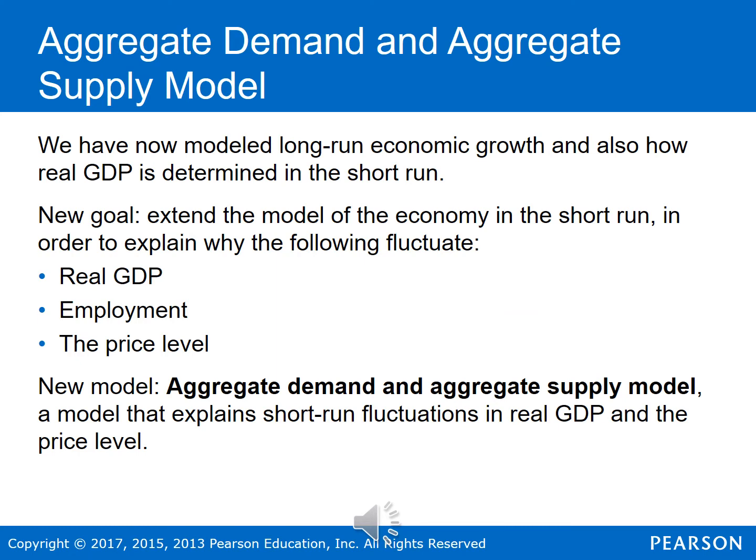Thus far in this class, we've seen how the U.S. economy has experienced a long-run upward trend in real GDP — that over time, real GDP has increased, which has increased the standard of living for members of society. In the short run, however, real GDP fluctuates around this long-term upward trend because of the business cycle, which we talked about in the previous chapters. Fluctuations in real GDP lead to fluctuations in employment, and these are the most visible and dramatic part of the business cycle that people experience.